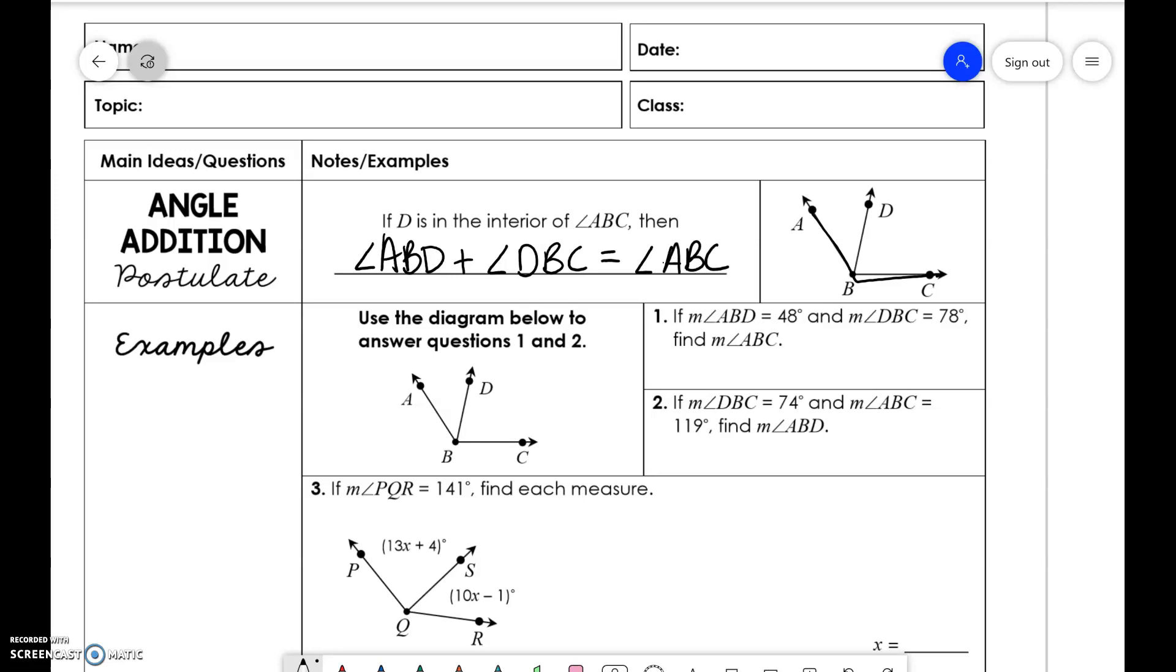Okay. So it's just saying this portion of the angle plus this portion of the angle is equal to the whole angle, which makes sense, right? We learned that with segments.